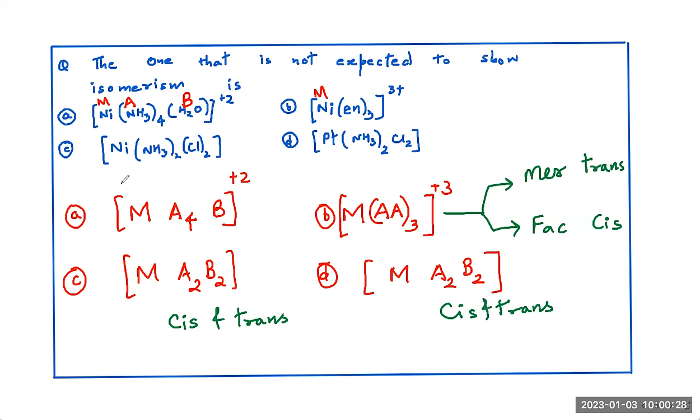Now, this makes A4B. In A4B, we'll have something like this. So, this is the geometry in which we cannot have isomerism, whether cis or trans. So, this is the answer. Answer is option A.